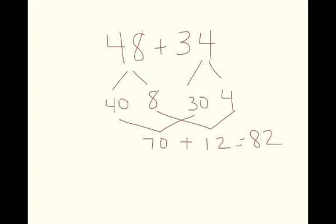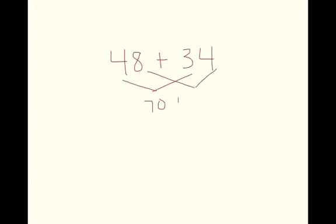Now sometimes what kids kind of do is they get shortcuts using this branching strategy. And they start doing something like this where they go 40 plus 30 is 70, 8 plus 4 is 12. How powerful for them to be able to look at it how it makes sense to them.